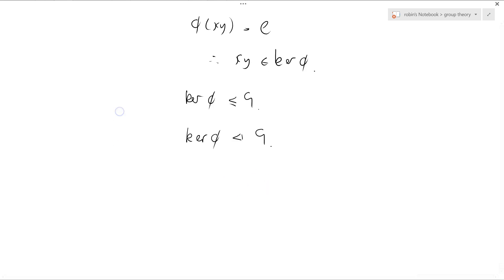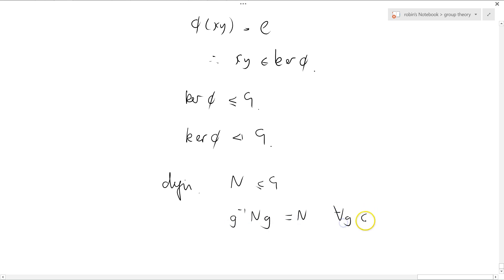Remember the definition for a normal subgroup. Definition: N is a subgroup of G, and also we need G inverse NG equals N for all G in the big group here.